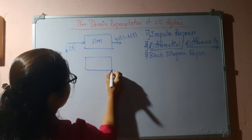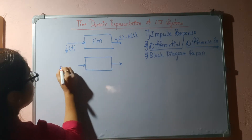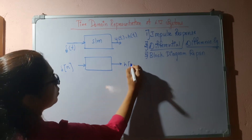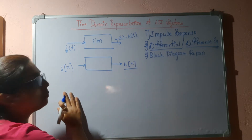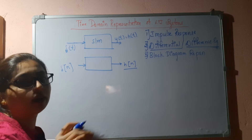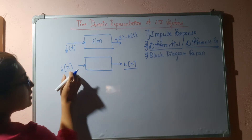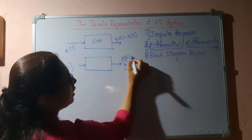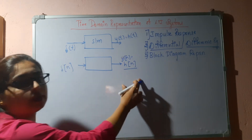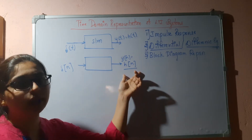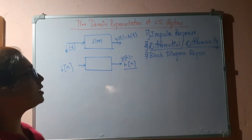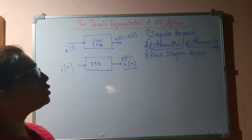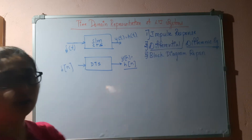The same applies to the discrete time system. This is the unit sample response. The unit impulse, also known as the Kronecker delta function, when applied as the input to the system, gives an output which is the unit impulse response, also called the unit sample response. This is in the discrete time system; that is in the continuous time system. Now we know what impulse response is.